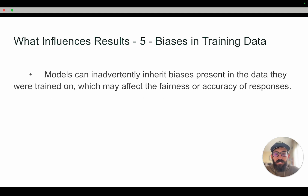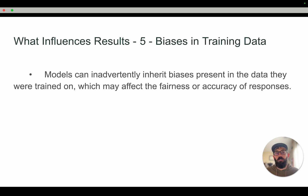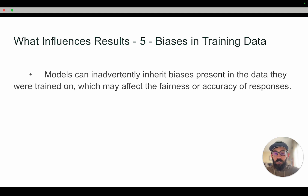Number five: biases in training data. Models can inadvertently have biases that are present within the data they were trained on. If you have bad data that the model is being trained on, that's going to be reflected in the results. The better and more plentiful the data set — assuming it's good data — the better your responses are going to be.